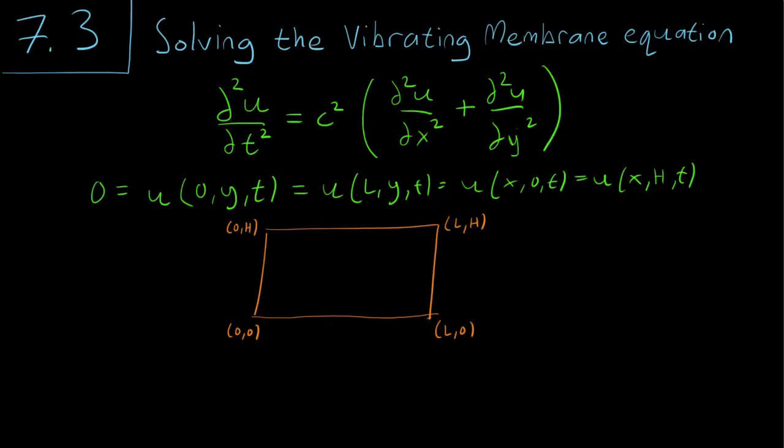Hello class, this is section 7.3, and in this video we are going to solve the vibrating string equation. This is what the equation looks like: the second derivative with respect to time equals a constant squared times the Laplacian of u. We are going to set boundary conditions of zero on all four sides of a rectangle with length l and height h.